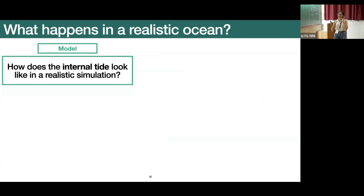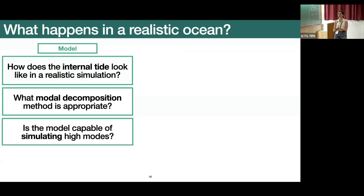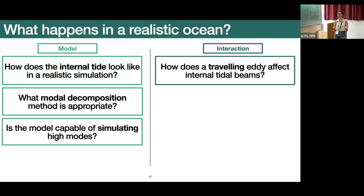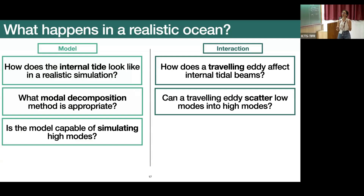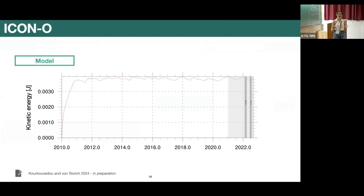In this talk I separate my questions into two categories. First, regarding the model: how does the internal tide look in this simulation, what modal decomposition method is appropriate, and is this model capable of simulating high modes? Second, regarding the eddy interactions: how does a traveling eddy affect the beams, can the eddy scatter low modes into higher modes as has been suggested, and is there any weakening of the tide caused by the eddy?